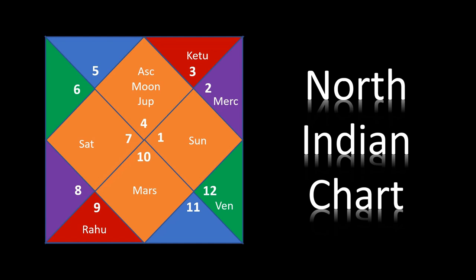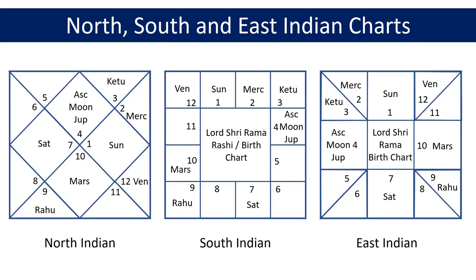The North Indian chart is also known as the Venus diamond chart and is based on Sina Chakra where signs or Rashis move but the houses are fixed. There are three variations of this chart in Vedic Astrology. The one on the left hand side is called the North Indian chart, the one in the middle is called the South Indian chart, and the one on the right hand side is called the East Indian chart. They all represent the same information but it is presented slightly differently.